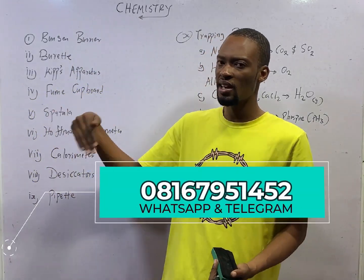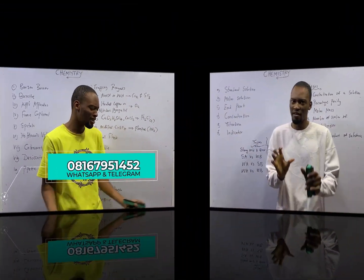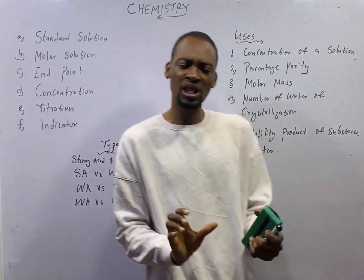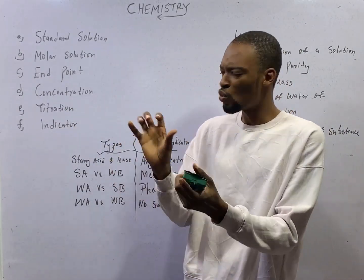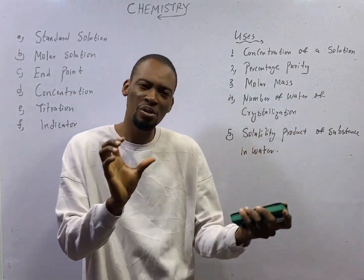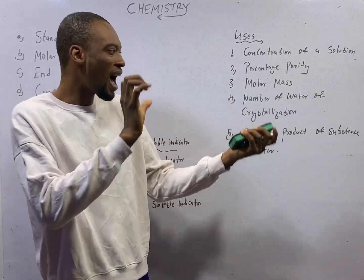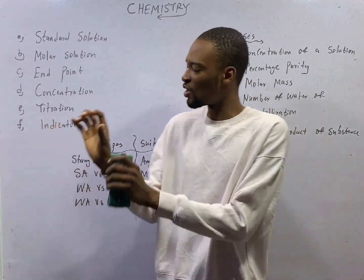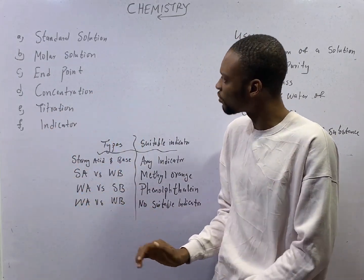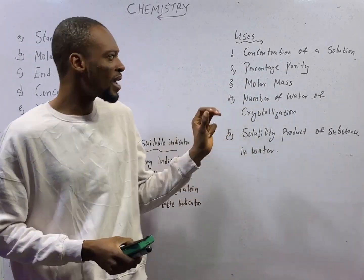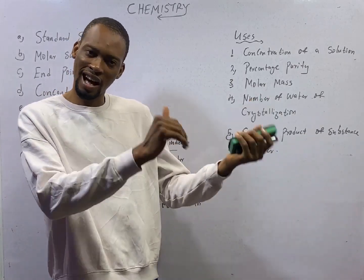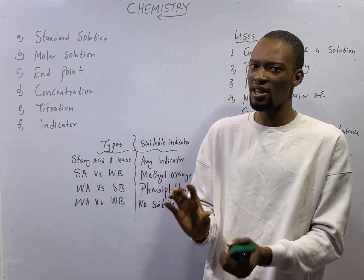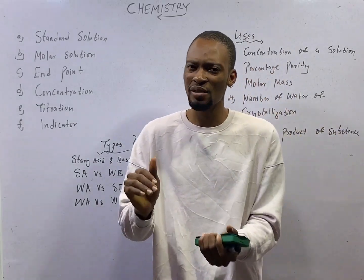In acid-base titration, dropping the liquid into the indicator allows the colour of the indicator to determine what the substance is. According to Arrhenius, acids are substances which when dissolved in water produce hydrogen ions as the only positive ion. While Arrhenius bases are substances which when dissolved in water produce hydroxide ions as the only negative ion. When acids react with bases, they form salt and water — a process referred to as neutralization.